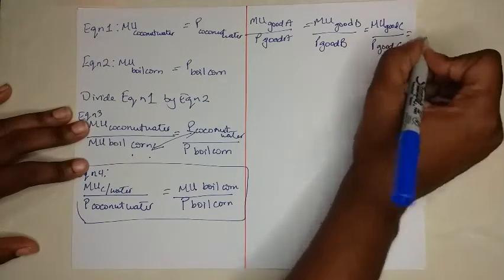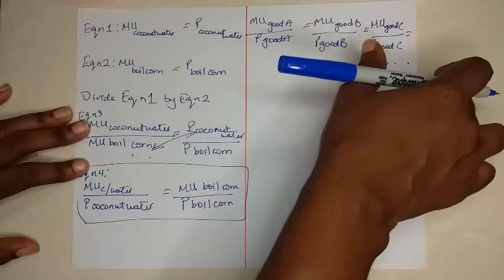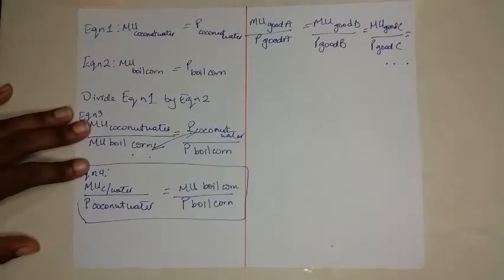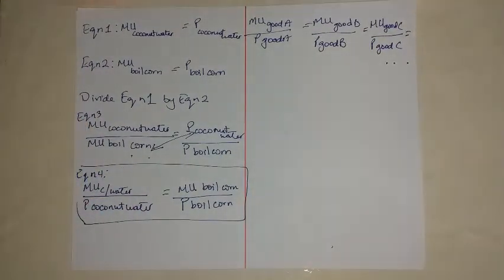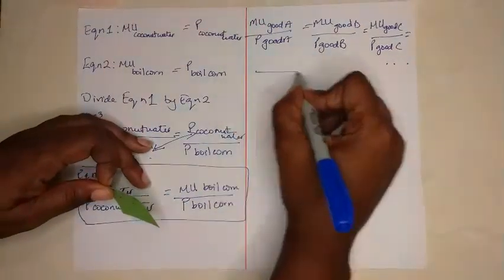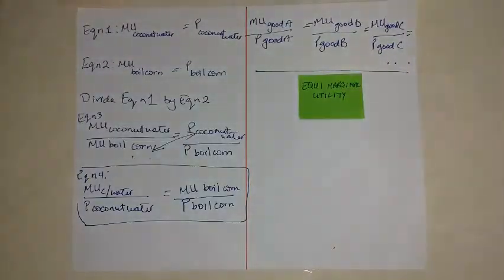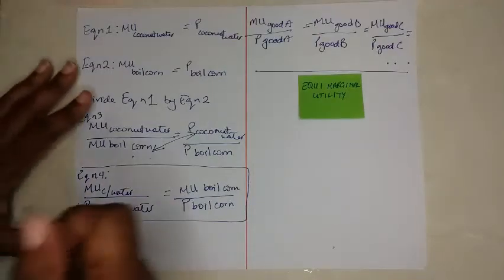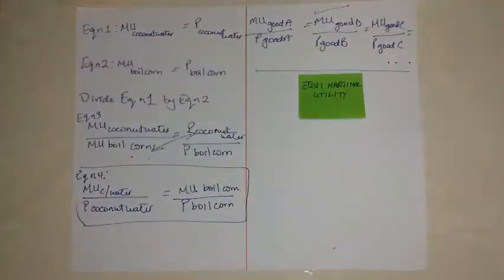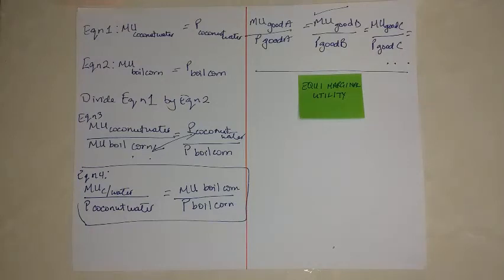which is equal to dot, dot, dot, infinite possibilities of all the goods and services consumed. And like I said, this is what we would call the equi-marginal utility. So if ever they ask you to state the equi-marginal utility, this is what they are speaking of here. And so this needs to hold true for utility to be maximized with respect to all goods and services consumed.